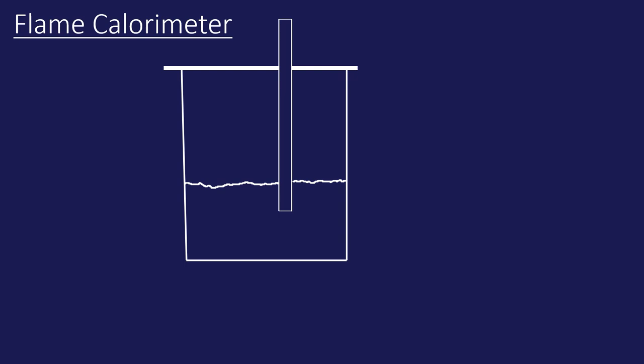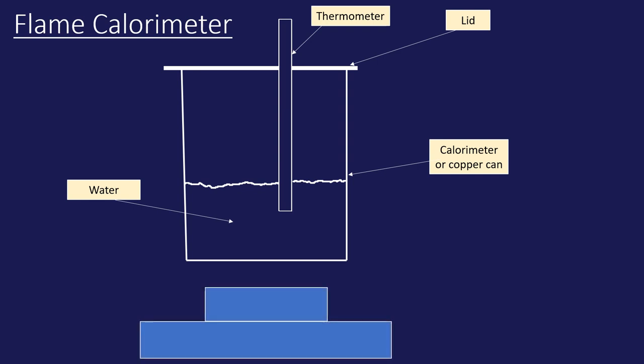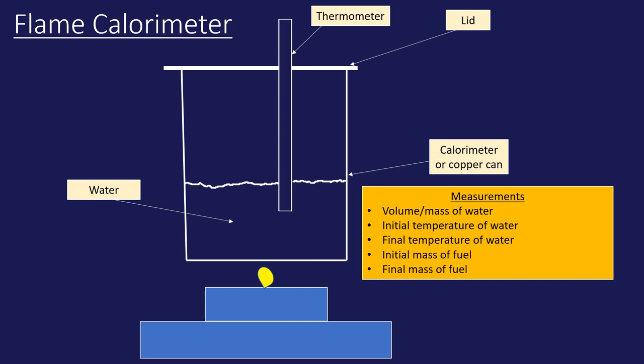The second type of experiment is for calculating enthalpy of combustion, where you burn a fuel. You use a copper can or copper calorimeter, again insulated, with a thermometer, and a fuel burner beneath it. The exothermic combustion reaction transfers energy into the water. Measurements needed: volume or mass of water, initial and final water temperatures to get ΔT, and the mass of the fuel before and after burning to calculate moles of fuel.